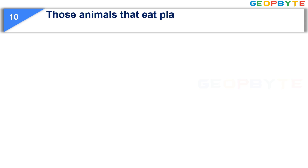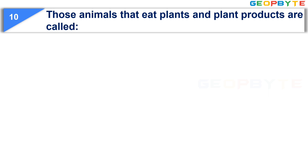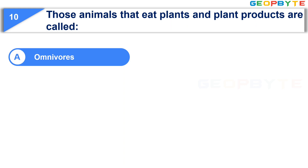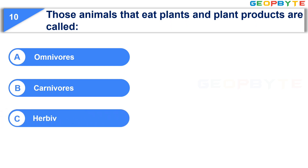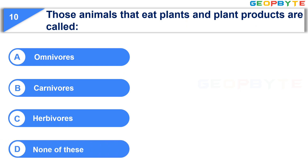Those animals that eat plants and plant products are called: Option A, Omnivorous. Option B, Carnivorous. Option C, Herbivorous. Option D, None of these. Your time starts now.